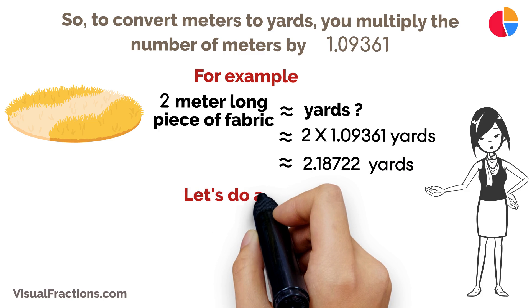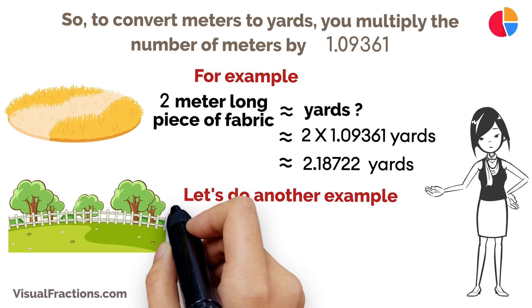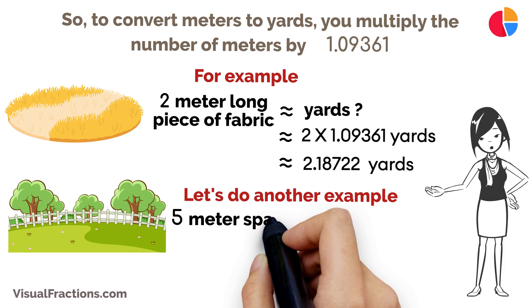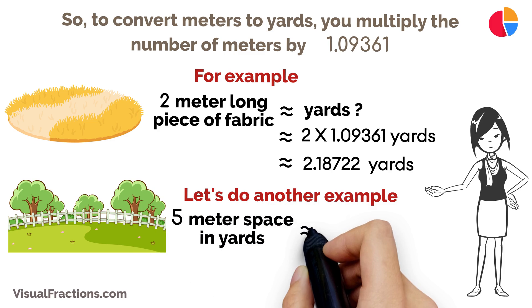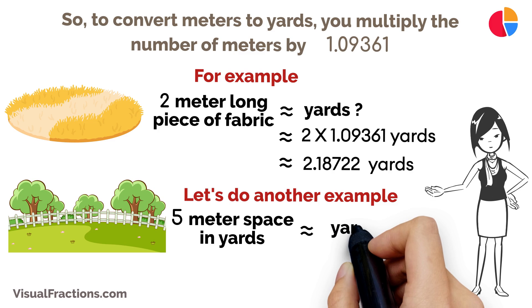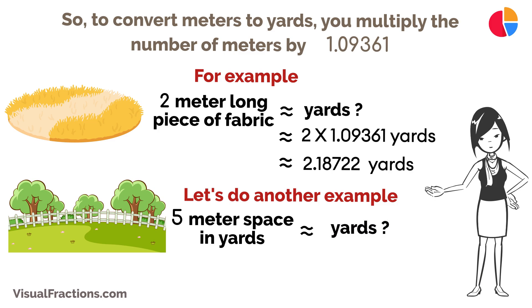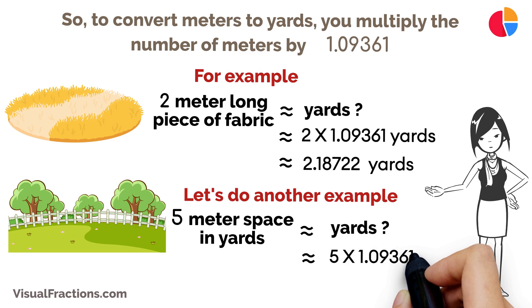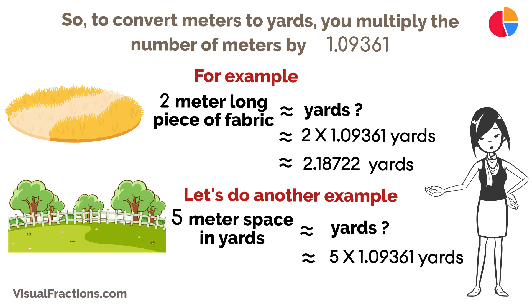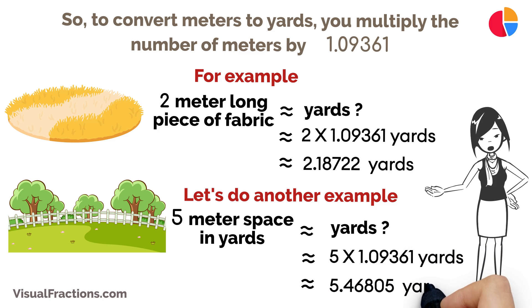Let's do another example. If you need to know the length of a 5 meter space in yards, you do the calculation of 5 meters times 1.09361, which equals approximately 5.46805 yards.